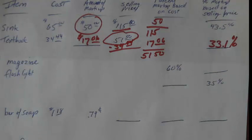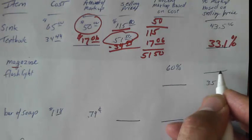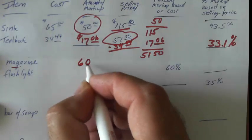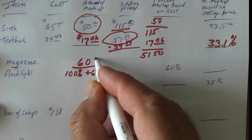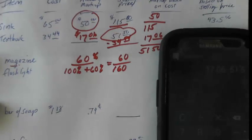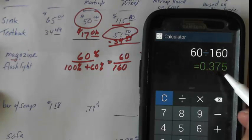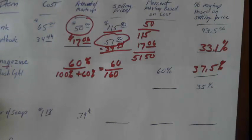Problems 5 and 6 go with the formulas in Examples 10 and 11 — you need to read those because you'll see them in homework. Example 10 involves a magazine where you're given markup based on cost and asked to find markup based on selling price. The formula is: percentage markup based on cost over 100% plus the markup based on cost. With 60%, that's 60 over 160. So 60 divided by 160 equals .375, giving us 37.5% markup based on selling price.